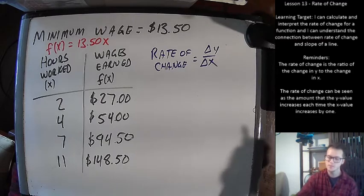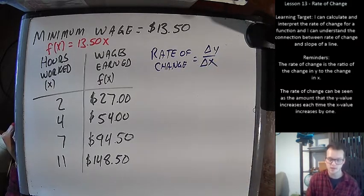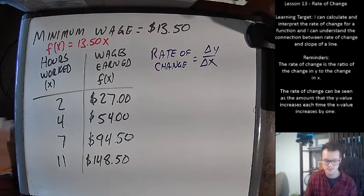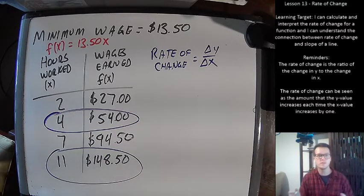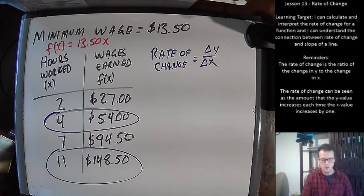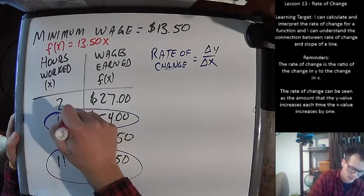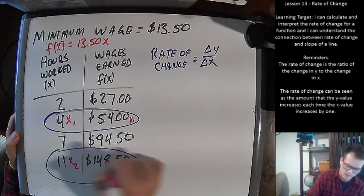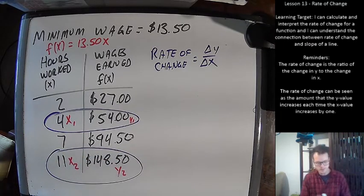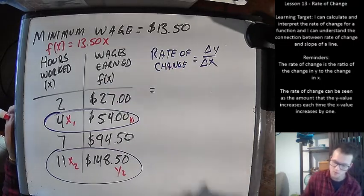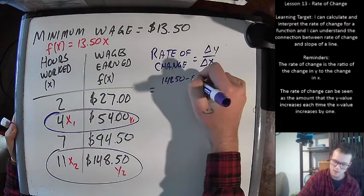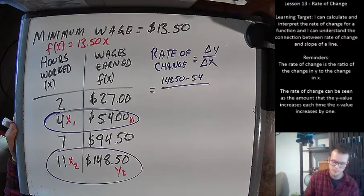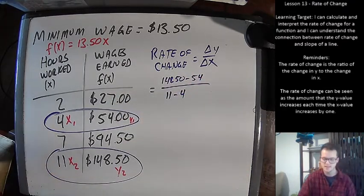So Delta Y over Delta X, that means we need to pick two points out, find the difference in the Y values and the difference in the X values. Any two of these points are going to work. I'm going to pick two at random. How about this one and this one? I could have picked the other two. I could have mixed and matched. It doesn't matter. You're going to get the same result every time. So now we need to name these points, X1, Y1, and X2, Y2. Just because these ones are smaller, I'm going to name this X1, and this is going to be my Y1, and then X2, Y2. And then we're just going to plug and chug here. So on top here for using the Delta Y, we're going to do 148.50 minus the other Y value, which is $54. And then on the bottom, we're going to do 11 minus four, which is X2 minus X1.